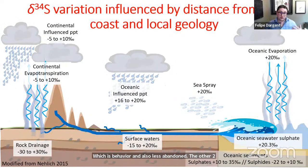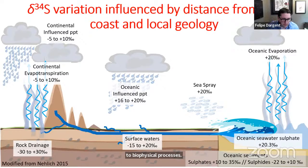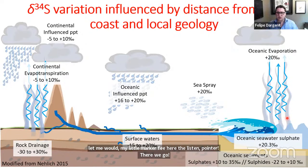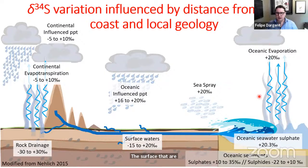Sulfur is one of the isotopes that varies predictably in space, and it does so because of fractionation — differences in mass lead to differences in the concentration of light versus heavy isotopes in space, in response to biophysical processes. Sulfur isotope ratios on the surface vary in response to several processes. First, ocean water has high and very stable values of δ34S, which stays around 20 per mil.